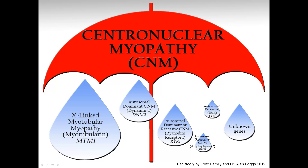After a biopsy that shows centronuclear myopathy, the logical next step is to pursue genetic testing, which can typically be done from a simple blood sample, to identify the specific subcategory. This is important for family planning, letting relatives know their risks of being carriers, understanding associated medical conditions, and recognizing that certain complications may be more common in one subcategory than another.